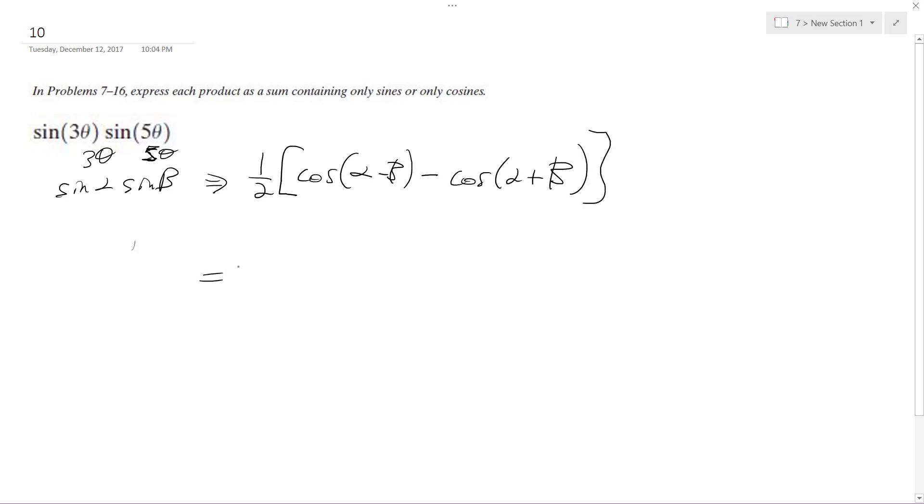All right, so this ends up being one-half of cosine 3 theta minus 5 theta minus cosine of 3 theta plus 5 theta.